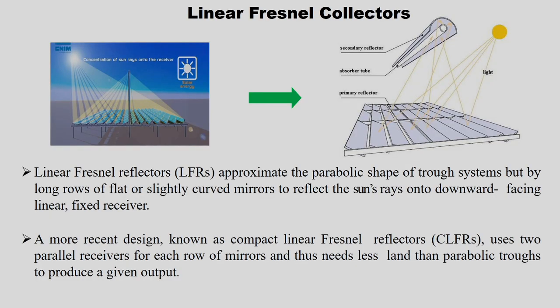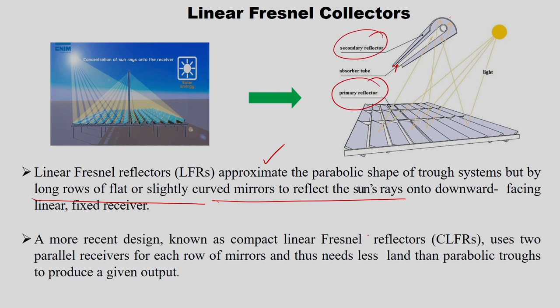The next type is linear Fresnel collectors. These collectors approximate the parabolic shape of trough systems using long rows of flat or slightly curved mirrors that reflect the sun's rays onto a downward-facing linear fixed receiver — which is the absorber tube — with a secondary reflector above it. The most recent design is the compact linear Fresnel reflector, which uses two parallel receivers for each row of mirrors and thus needs less land than parabolic troughs to produce a given output.